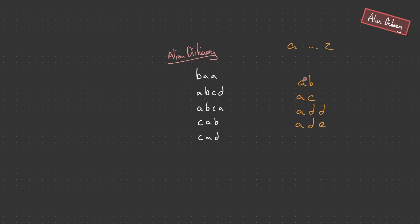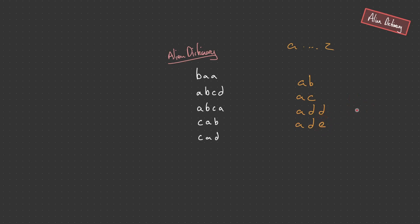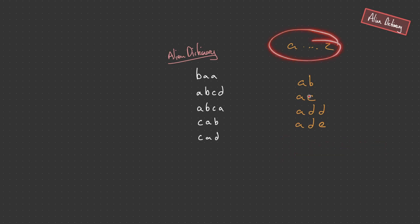So initially we compare a and a — these are the same so they cancel out. Then we move over to b and c — these are differentiating characters, so we can assume that b comes before c. Then we assess the next two words: the a's cancel out, we hit c and d — these are different so we can assume c comes before d. Then we compare the last two words: the a's cancel out, the d's cancel out, the last one is d and e — d is different to e, so we can assume that d comes before e. So within this: b comes before c, c comes before d, and d comes before e — which all fits within our alphabet.